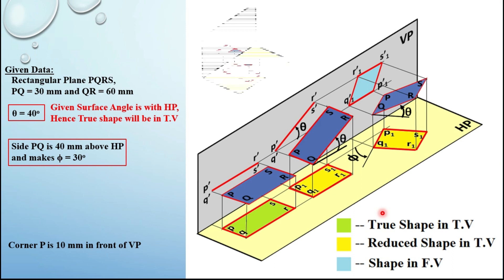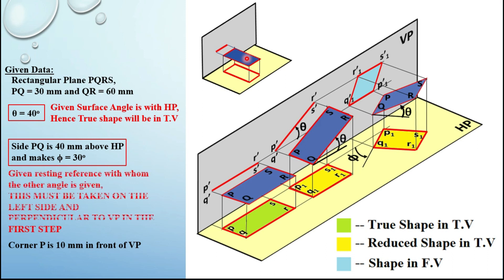The reason I have taken this rectangle in this particular position rather than another orientation is that step two states the resting reference — with whom the other angle is given — must be on the left-hand side and perpendicular to VP in the first step. If you look at side PQ placed parallel to VP rather than perpendicular, that cannot be our first stage. You have to keep it perpendicular.